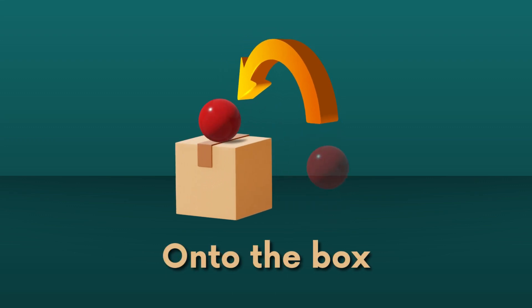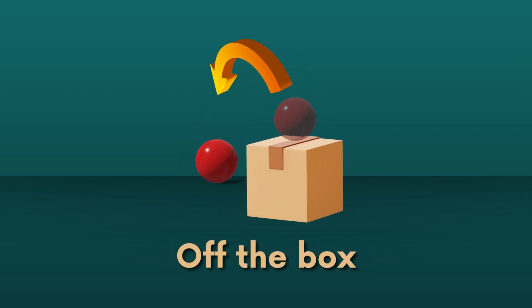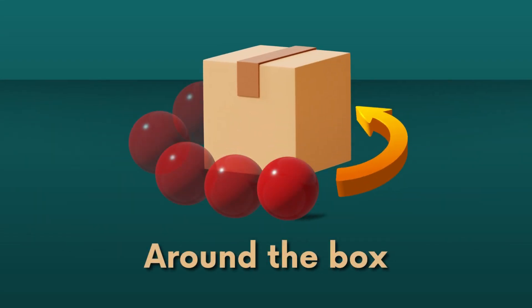The preposition 'onto' indicates movement onto or placing an object on a specific object or surface. For example, 'the ball falls onto the box.' The preposition 'off' indicates movement away or getting down from a specific object or surface. For example, 'the ball falls off the box.' The preposition 'around' indicates movement in a circular path or surrounding a specific object or location. For example, 'the ball rolls around the box.'